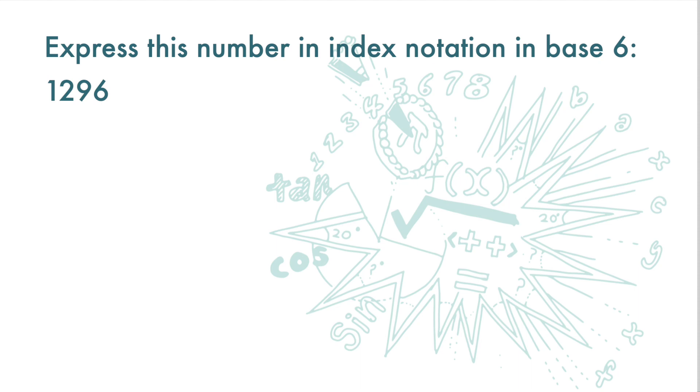Express this number in index notation in base 6: 1296. This question wants us to write this number in index notation in base 6. That means we want to write it as 6 to the power of a number. How do we get this number? We can use the repeated division method.